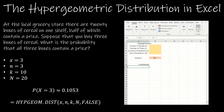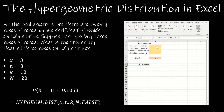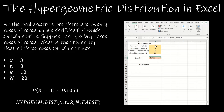I want to set it up so Excel always finds the answer for me. Notice the way I have this set up: x, n, k, N — just like before, but easier. X is 3, n is 3, k is 10, and big N is 20. It finds the answer for me automatically, which is a lot less work.